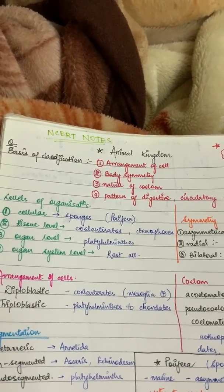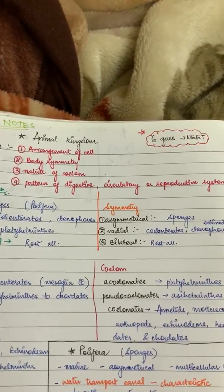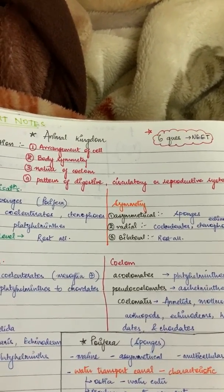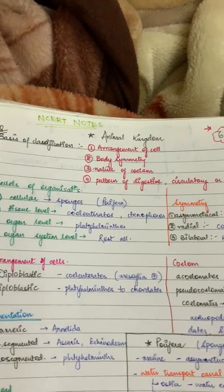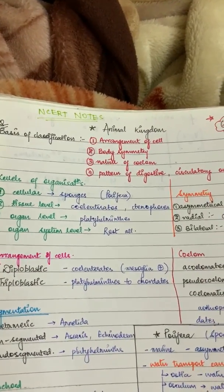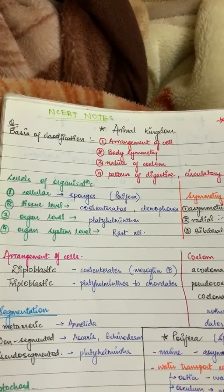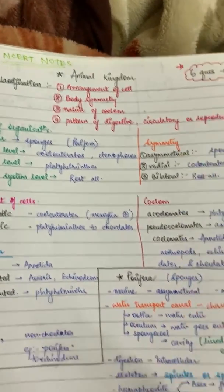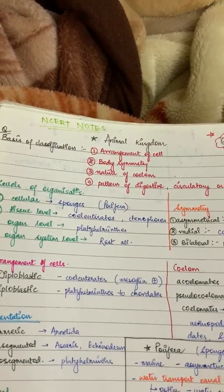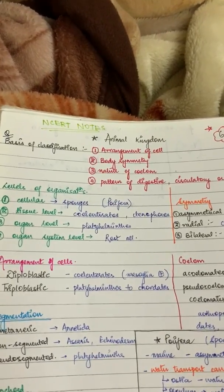Hi guys, today I am with NCRT notes of Animal Kingdom. This chapter is really very important - six or seven questions used to come in NEET. I made these notes to show you how to make NCRT notes. I have made notes till only Phylum Porifera; if you need more, I can make more, so write it in the comment section.